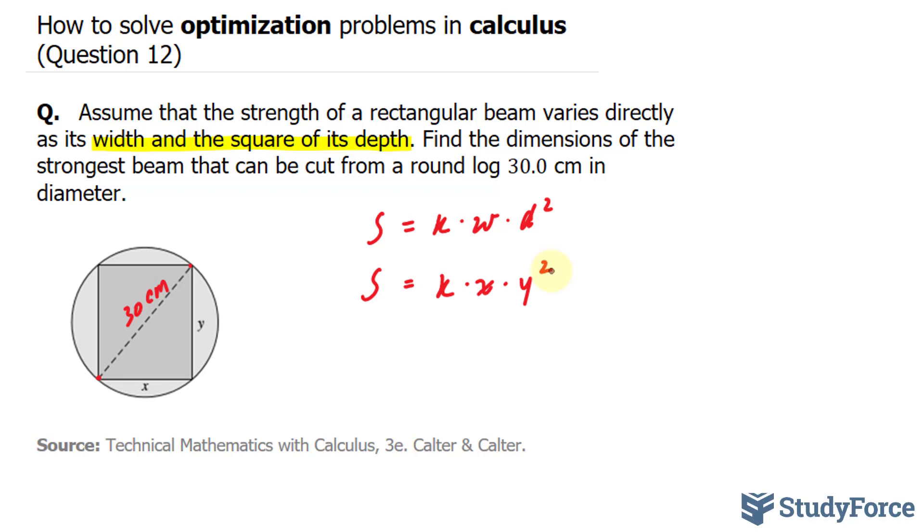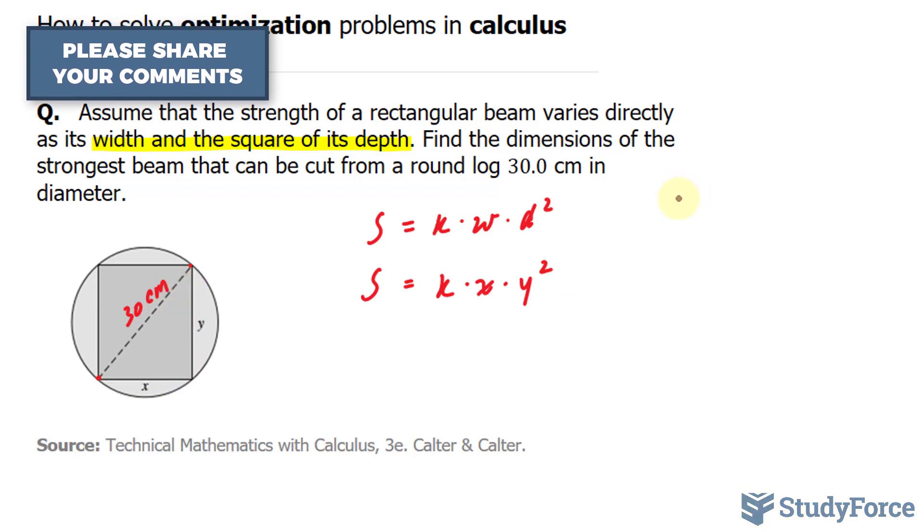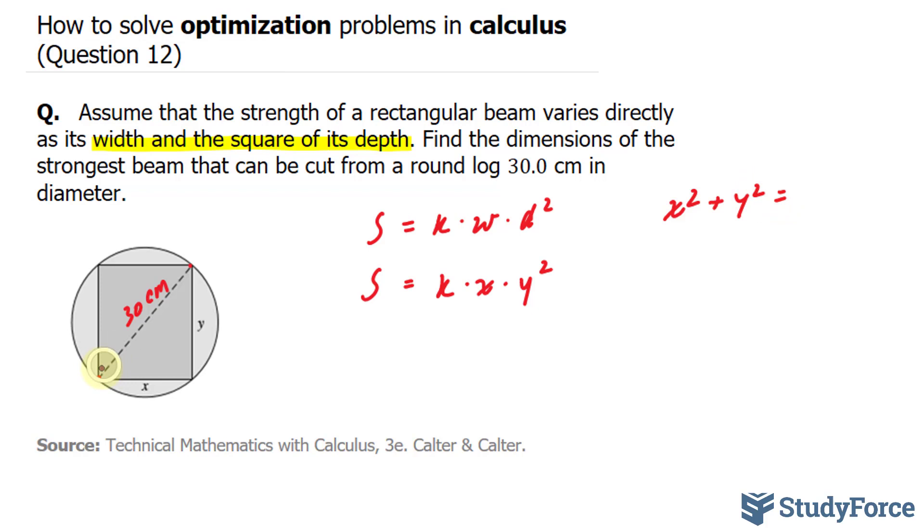Next, I need to come up with a formula that relates both x and y. If you look closely, the Pythagorean theorem works best. The Pythagorean theorem relates x and y as x squared plus y squared is equal to the hypotenuse. And in our case, it's 30. 30 squared or 900.